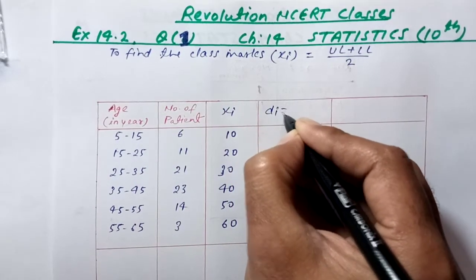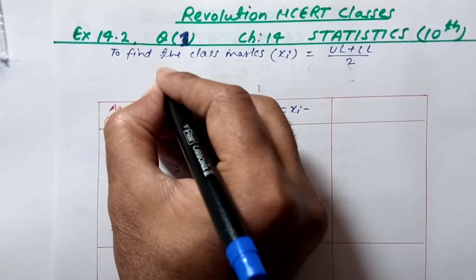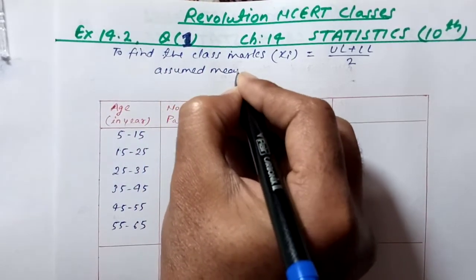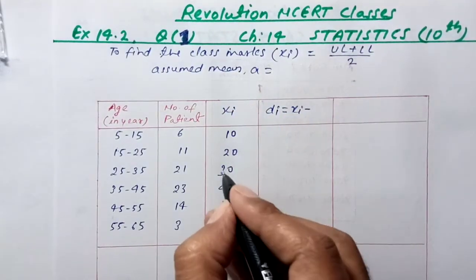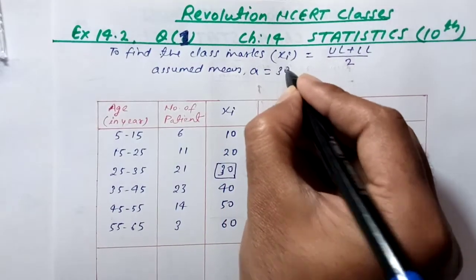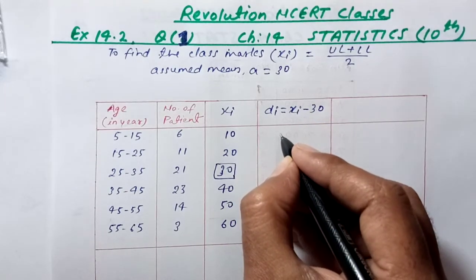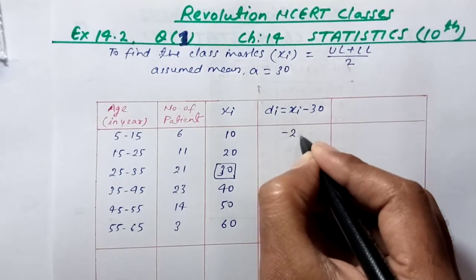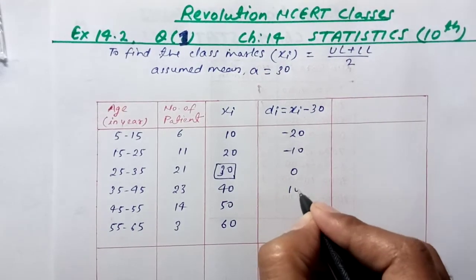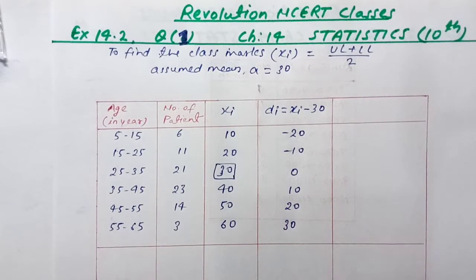The next column is deviation d_i, which is x_i minus assumed mean. We can assume the mean. Let's assume mean as 30. So x_i minus 30.